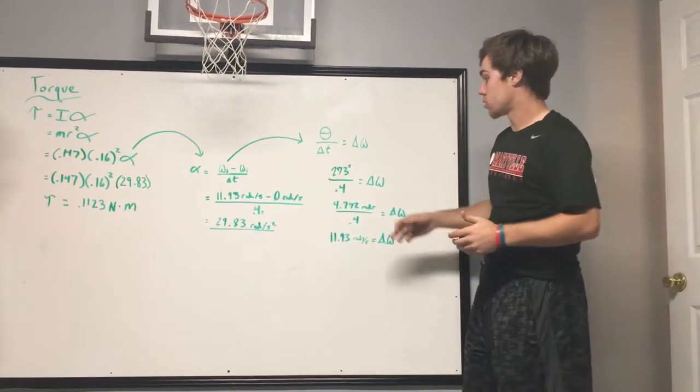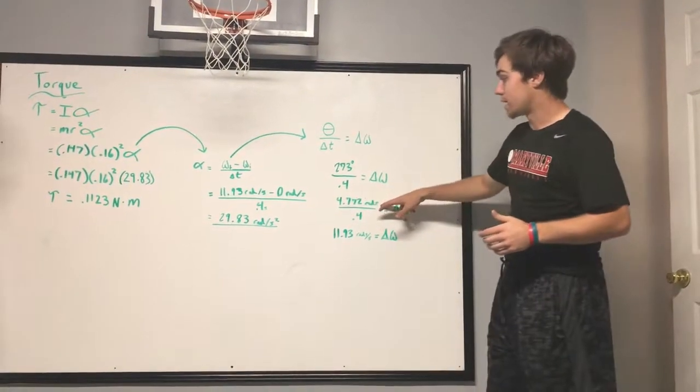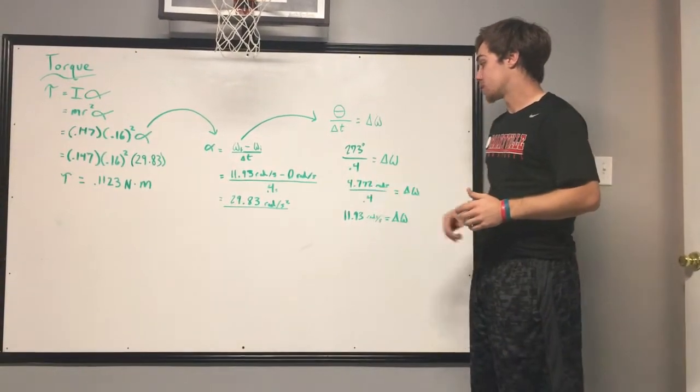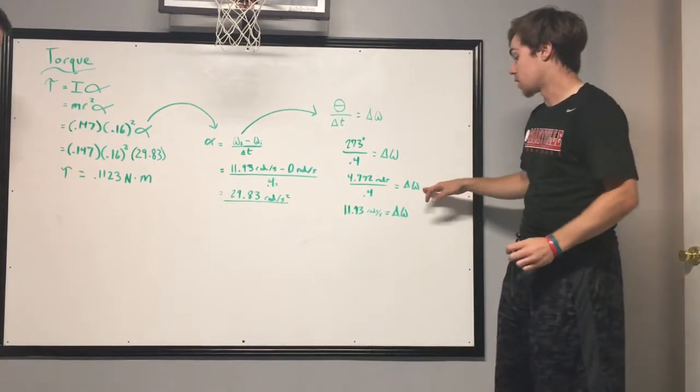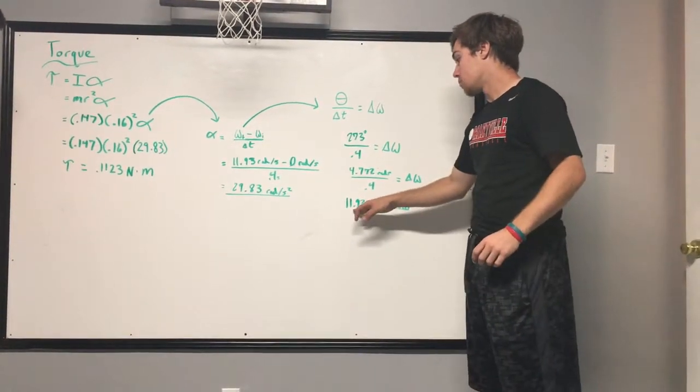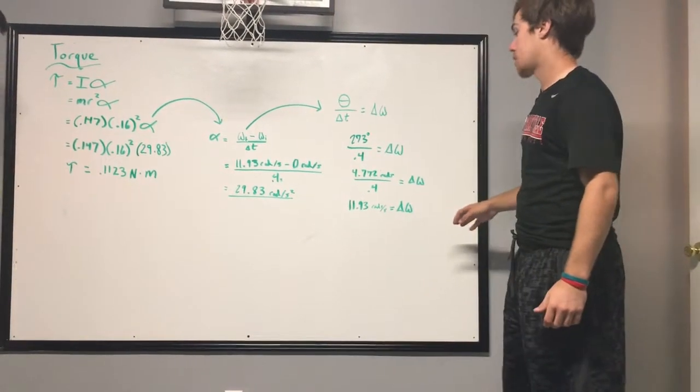So we had 273 degrees and converted that to radians. So we had 4.772 radians over 0.4 seconds to find omega, which came out to be 11.93 radians per second.